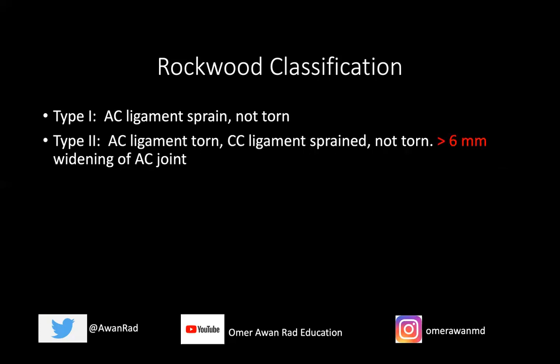A type two you can definitely identify on imaging. That's when the AC ligament is torn, but the coracoclavicular ligament is relatively intact — sprained but not torn. The AC interval measures more than six millimeters.